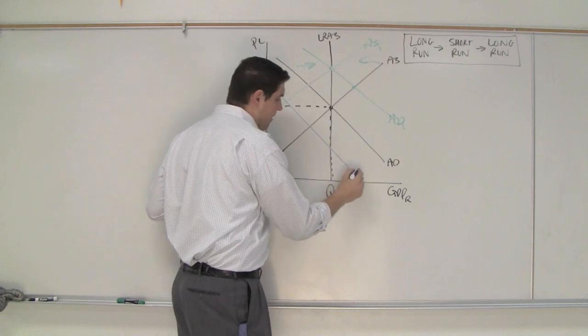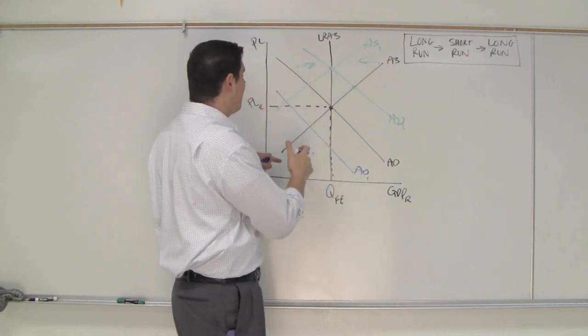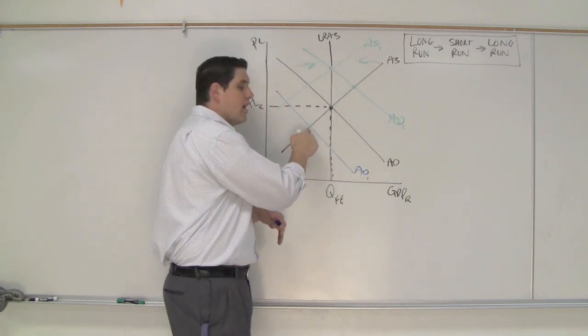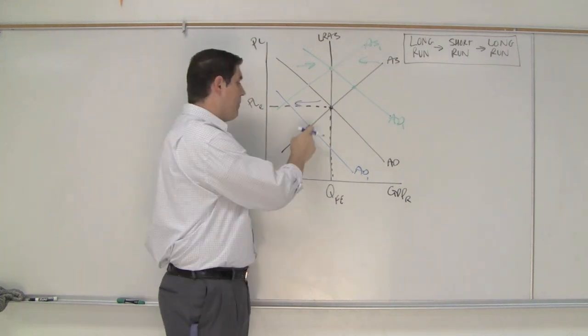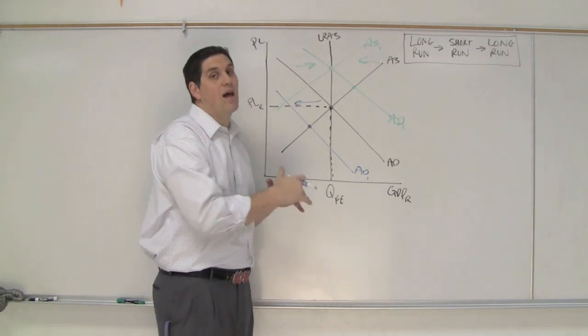Let's say there's a decrease in aggregate demand. Aggregate demand has fall. Price level fell. Quantity fell. We're now here at a new equilibrium in the short run. We have a recessionary gap. Now we have a low quantity which means high unemployment.